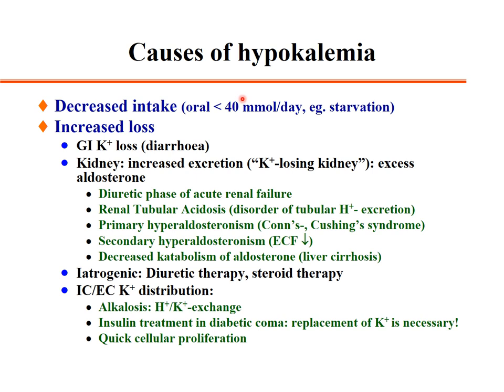Causes of hypokalemia include decreased intake — less than 40 mmol per day as in starvation — or increased GI loss such as diarrhea. Renal losses include potassium-losing kidney, excess aldosterone, the diuretic phase of acute renal failure, or renal tubular acidosis with disordered tubular proton excretion.